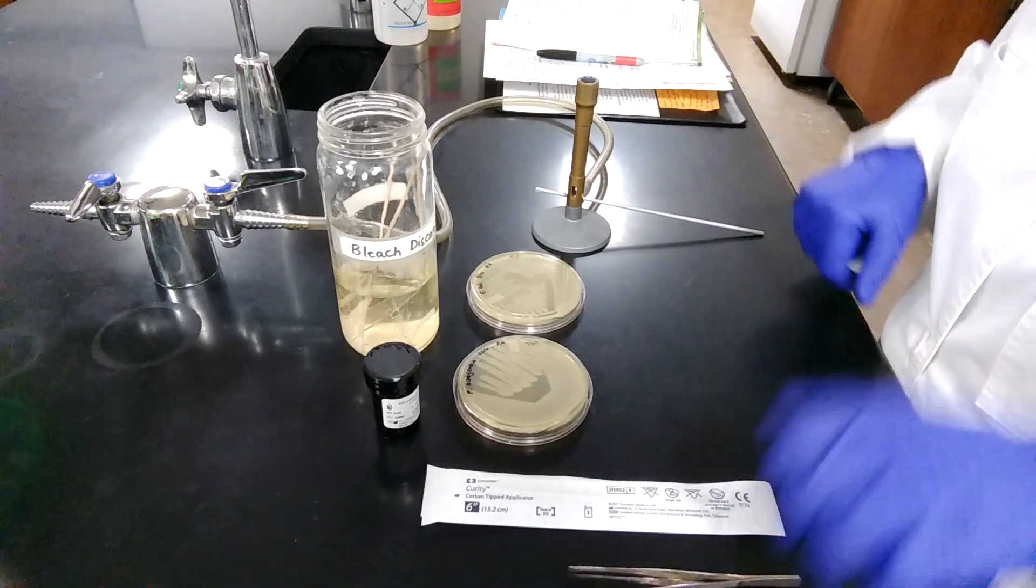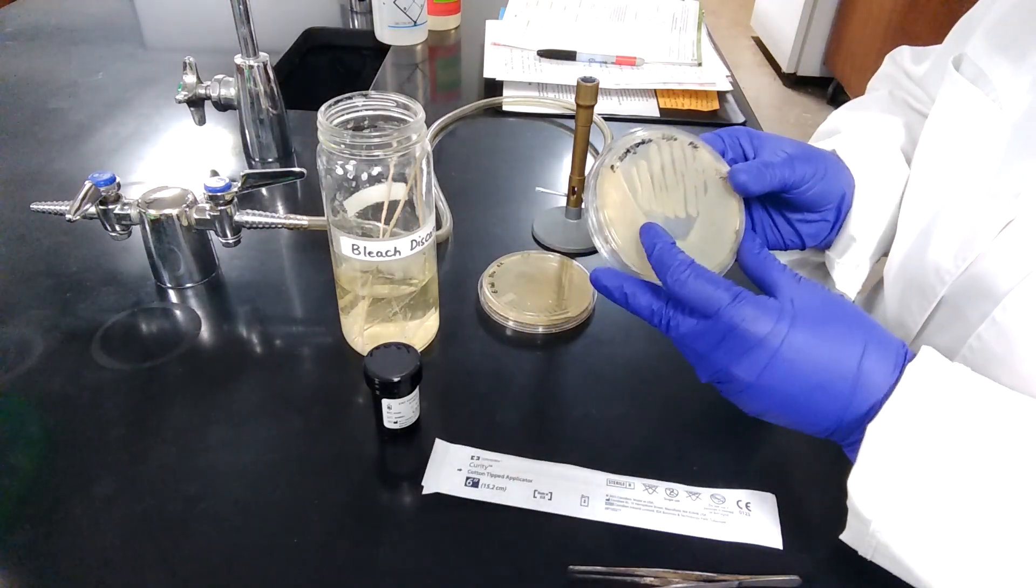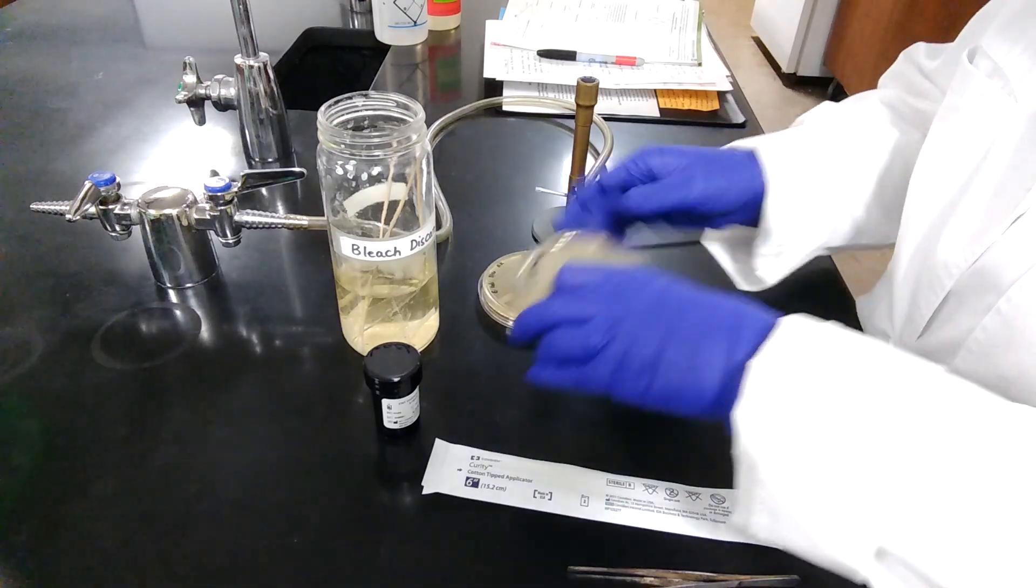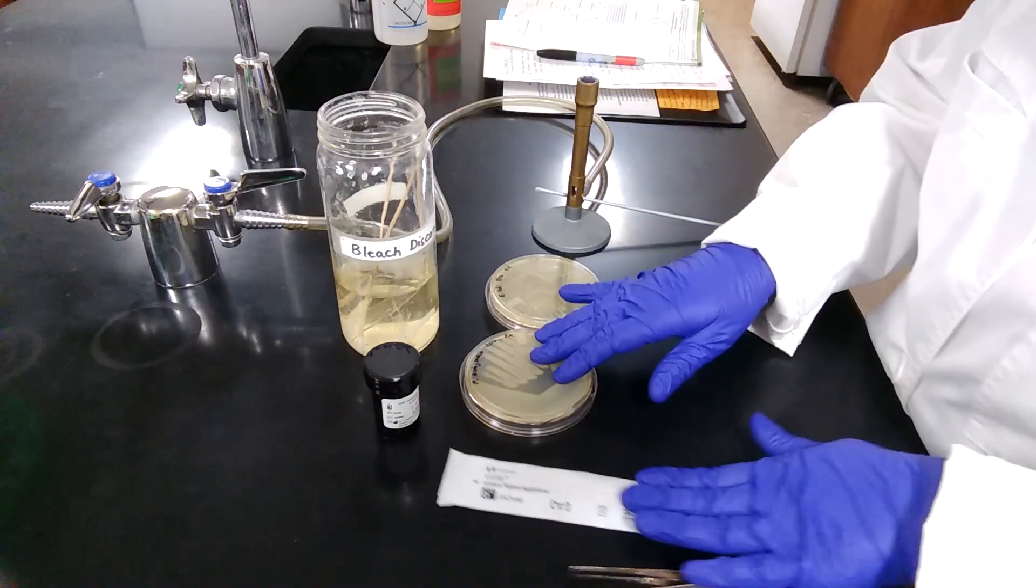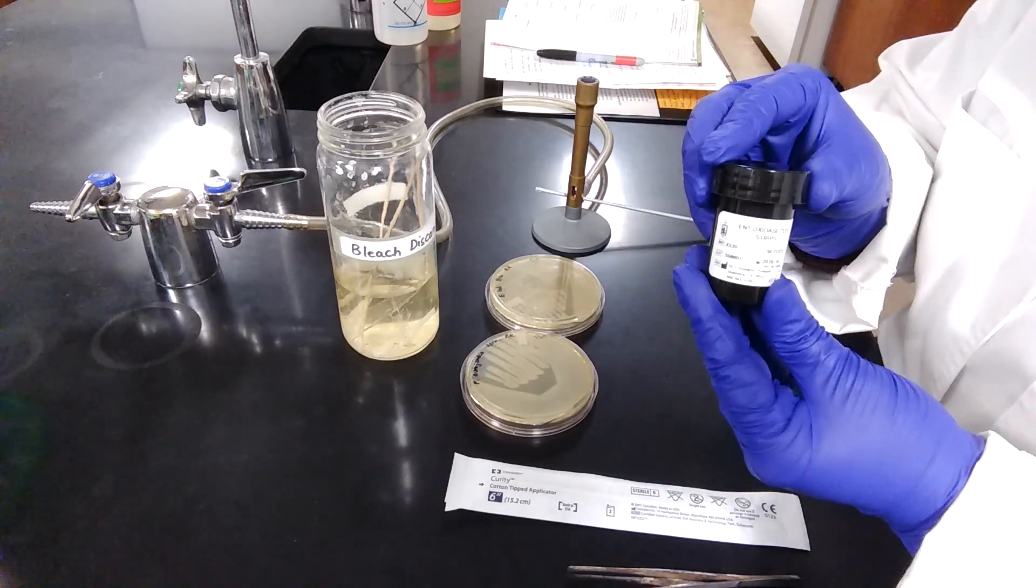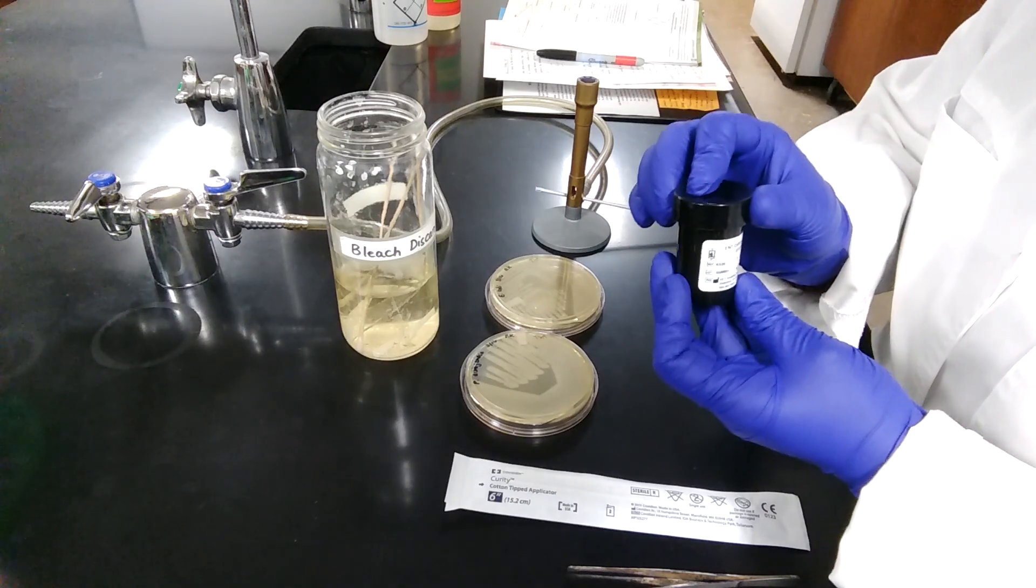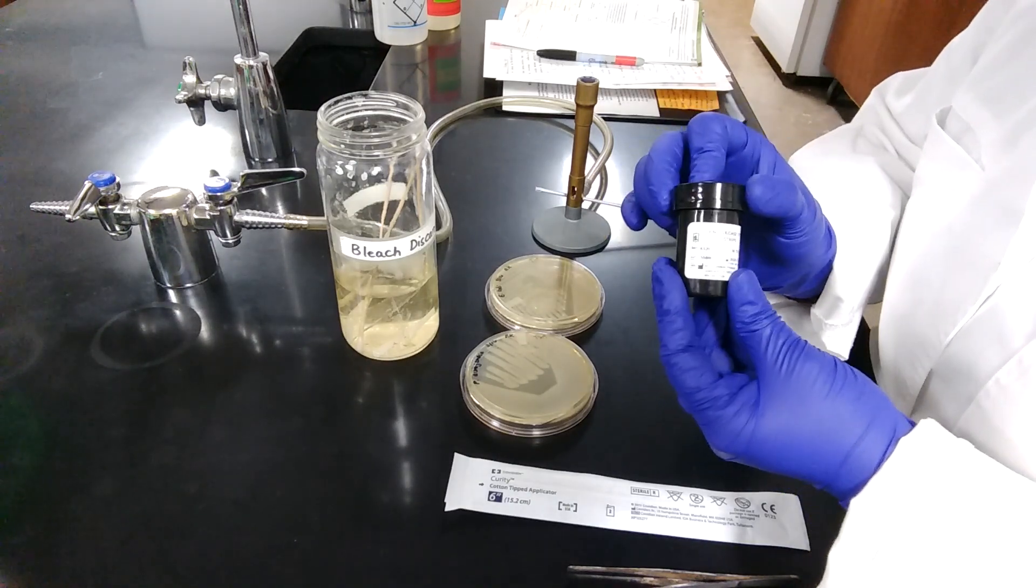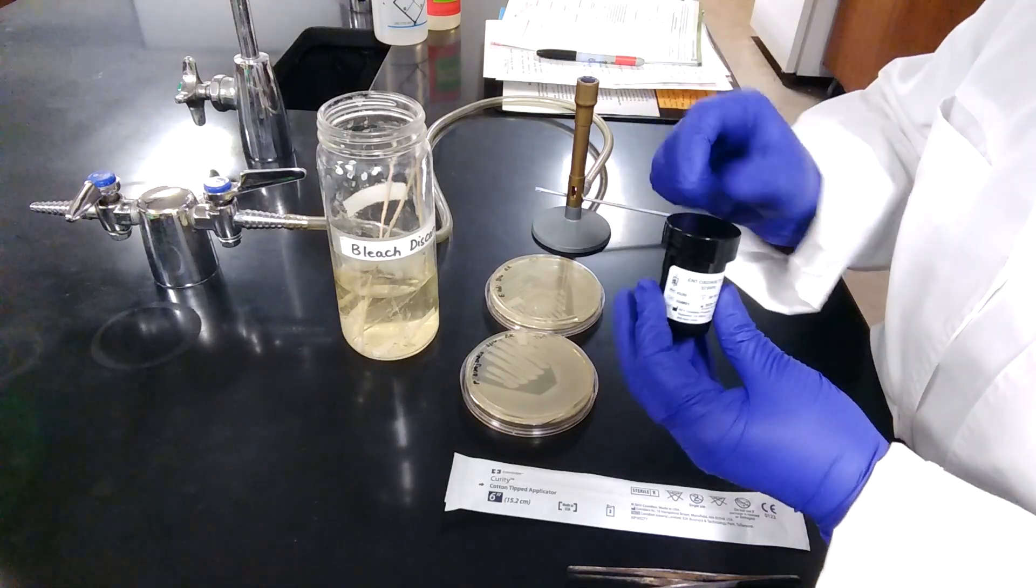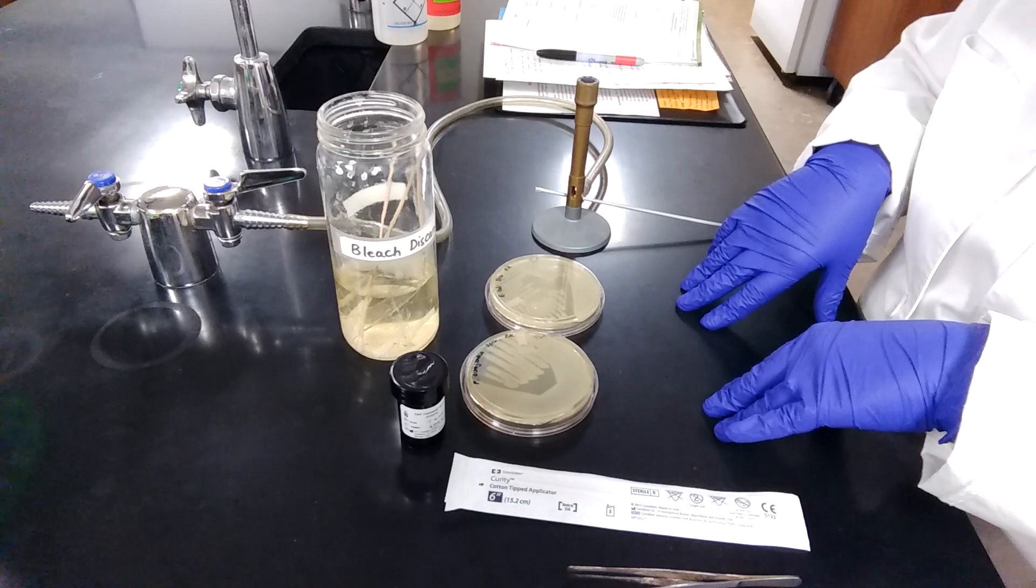So to begin with, we have cultures of two bacterial species, Pseudomonas aeruginosa on TSA plate and E. coli on TSA plate as well. The reagent that we're using is called the oxidase test reagent. Basically, we are using paper strips that are already soaked into the oxidase test reagent and dried. So I'll be just pulling out a paper strip from this container here and doing the test on that paper strip.